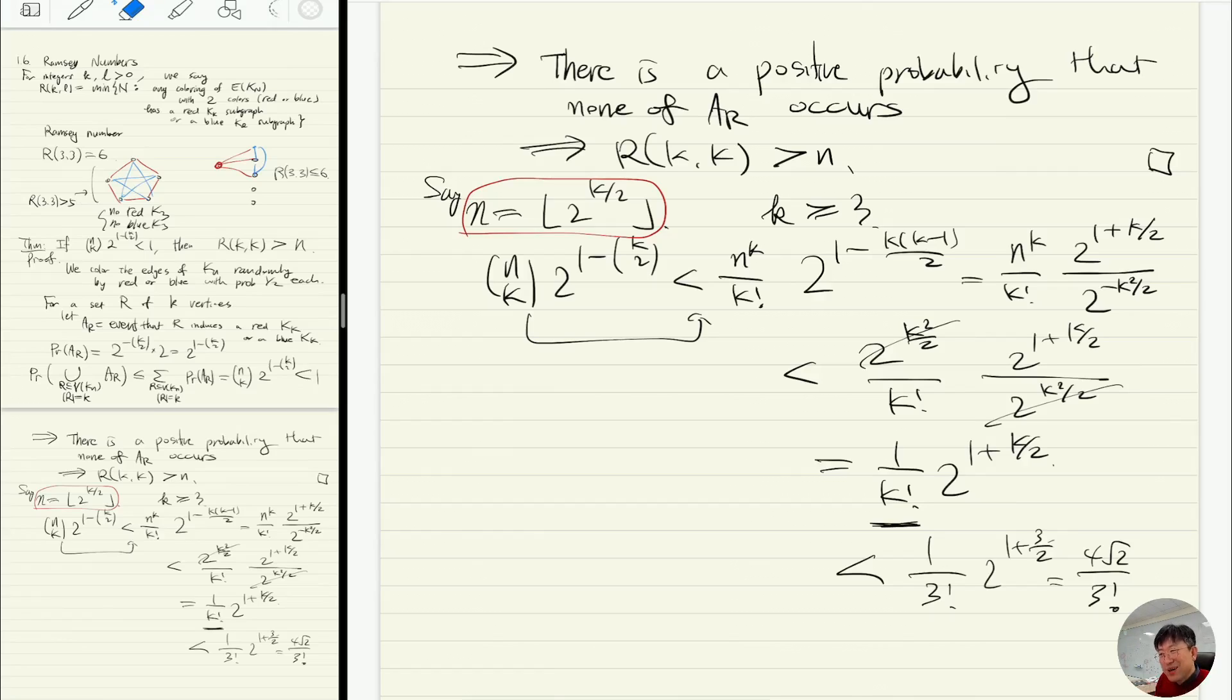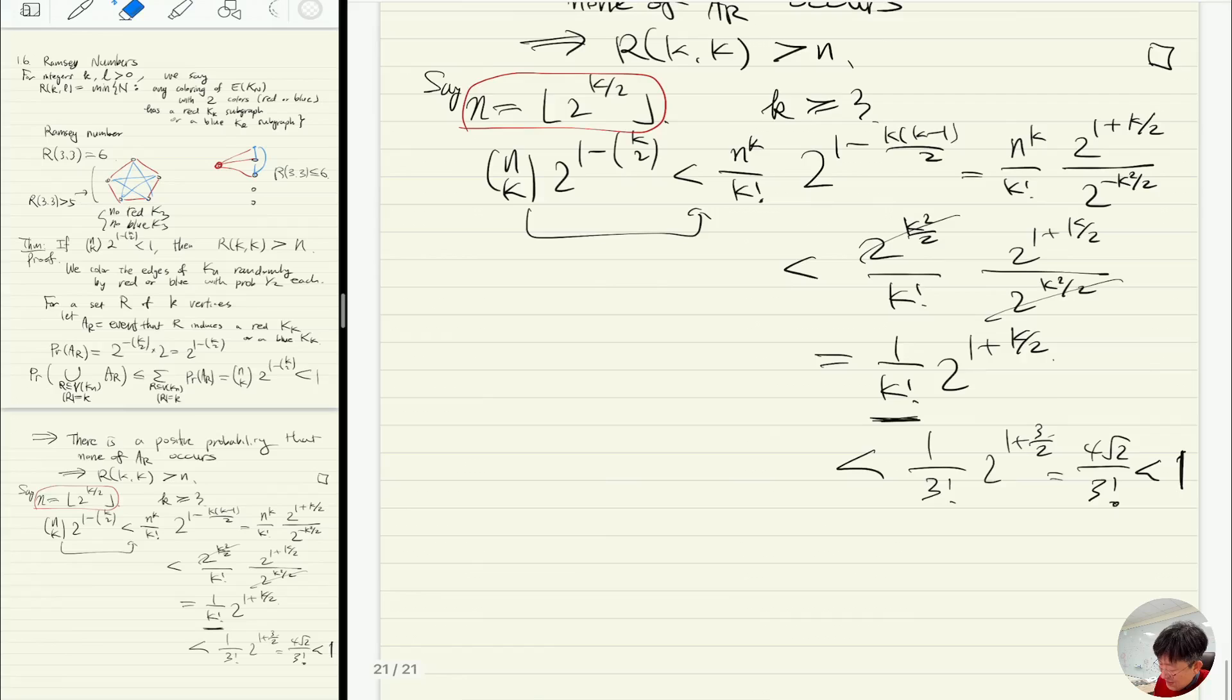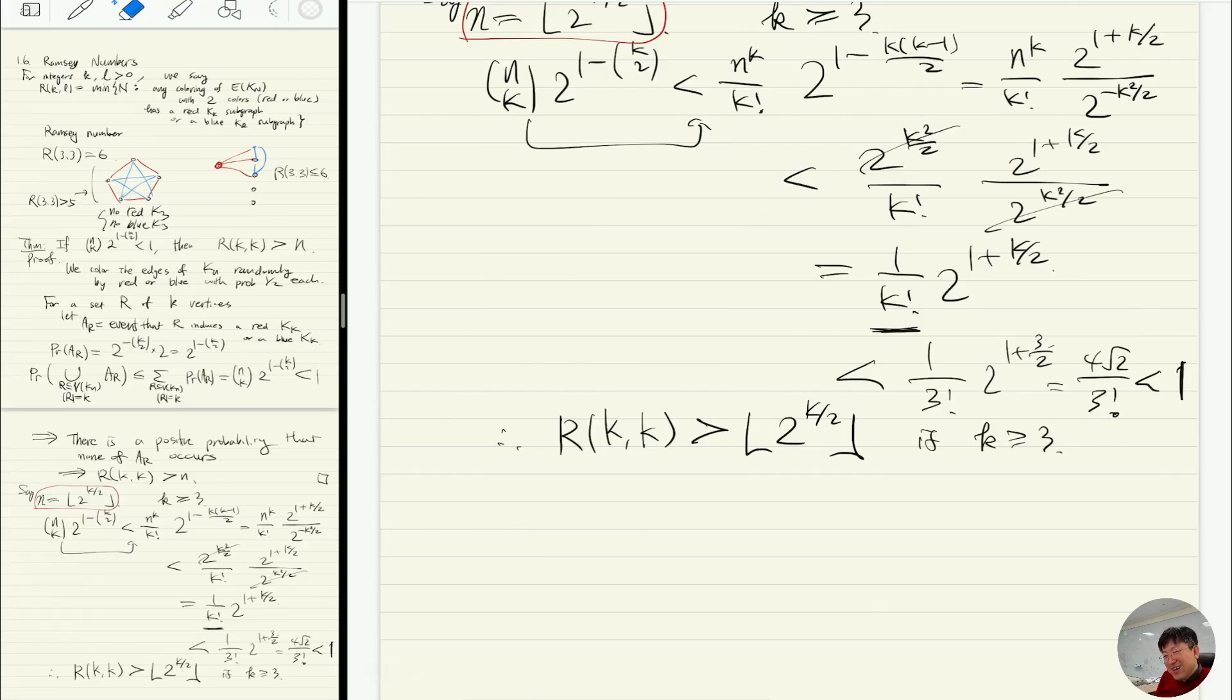That means the Ramsey number R(k,k) is at least bigger than 2 to the k over 3 if k is at least 3. So this is how we can get asymptotics, and there are ways to get better bounds. This is just a simple example.